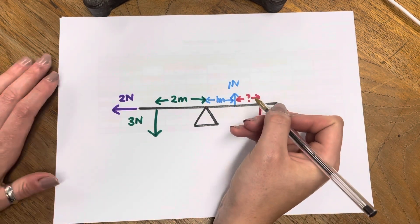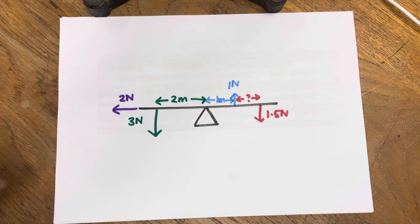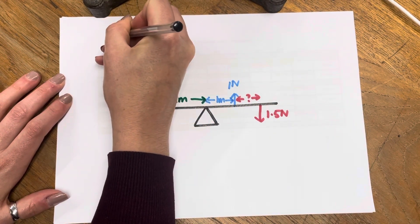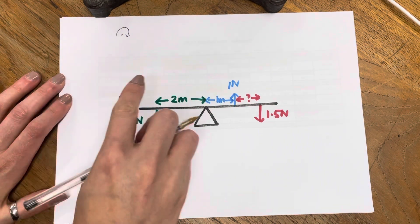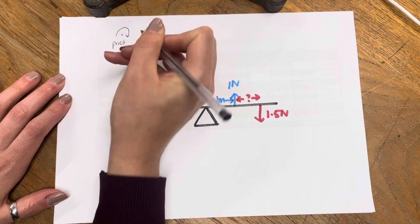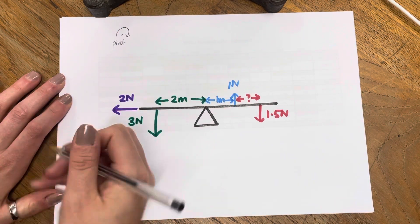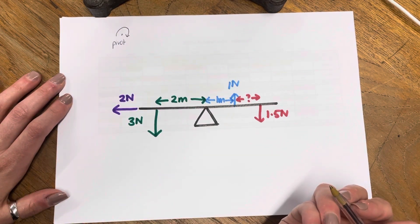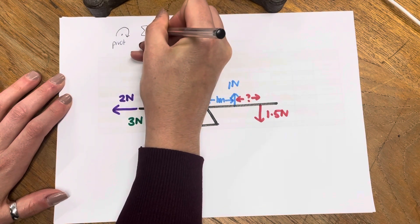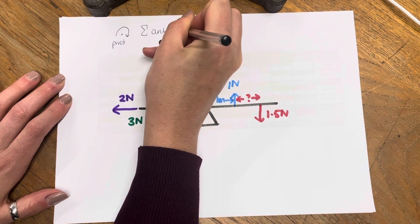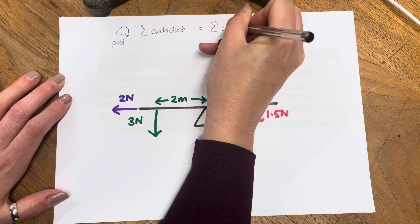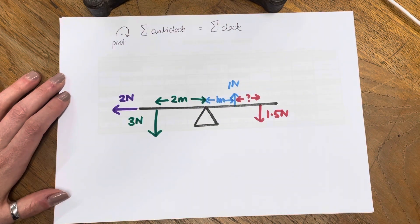To work out this missing thing, I'm going to apply the principle of moments. You often see this written as 'taking moments around whatever point' — I'm going to write 'the pivot', but it could be 'taking moments around point A'. And the sum of anticlock equals the sum of clock — that's how I usually write it, because I'm lazy and don't want to write the entire thing out.